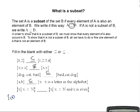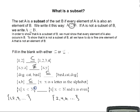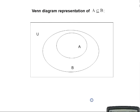The set of all natural numbers {1, 2, 3, ...} is not a subset of the set of even natural numbers {2, 4, 6, ...} because 1 is not an element of the set of even natural numbers.